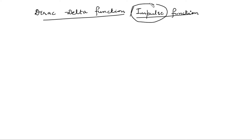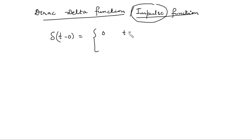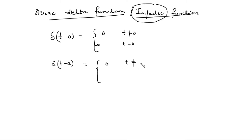Basically, an impulse may be interpreted as a force of very large magnitude applied for just an instant. For a while the magnitude of the function is very very large, and before and after that instant it is zero. So basically, the Dirac delta function at any point zero is zero when t is not zero, and when t is zero it is infinity. Similarly, the Dirac delta function at any point a is zero when t is not equal to a.